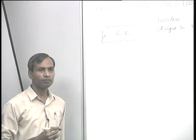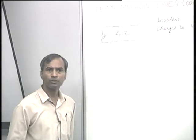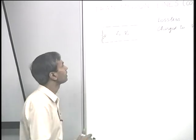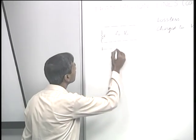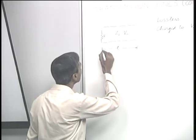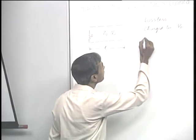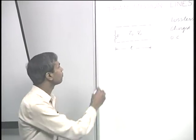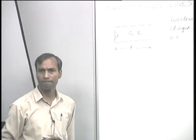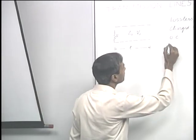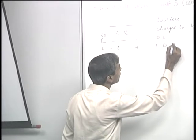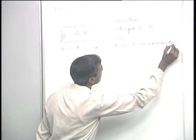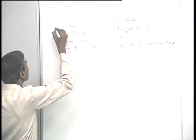How would the line be charged? Perhaps by connecting a voltage source V naught at one end, in a situation similar to what we considered last time. Let the line length be L, and let the line be open circuited at the end away from the end where the resistor R is connected. At T equal to 0, R is connected through a switch.